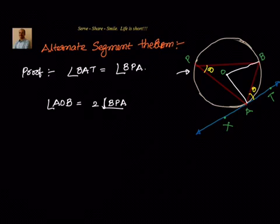The angle made by the arc at the center is double the angle made at any point in the same segment. So we write: angle AOB equals 2 times angle APB, which equals 2 theta.